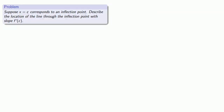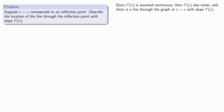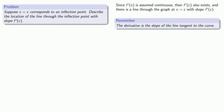What's the geometry of an inflection point beyond the change in concavity? Suppose x equals c corresponds to an inflection point. Let's describe the location of the line through the inflection point with slope f prime of c. Since we've assumed f prime of x is continuous, then f prime of c exists, and so there is a line through the graph at x equals c with slope f prime of c. One of the important things you should learn is that the derivative is the slope of the line tangent to the curve, and so we might describe this line as the tangent to the curve.